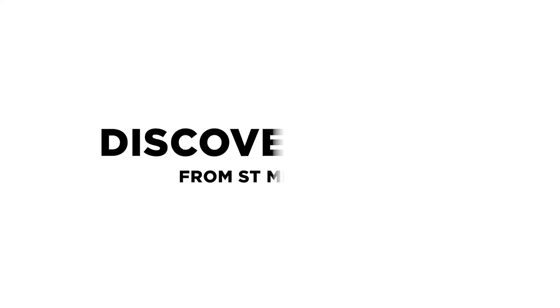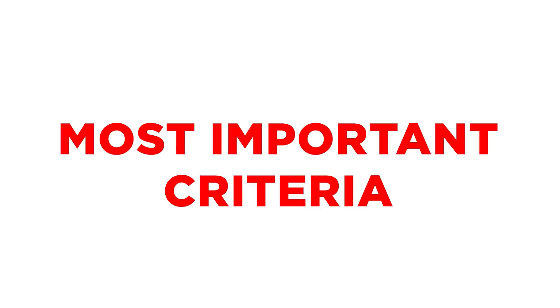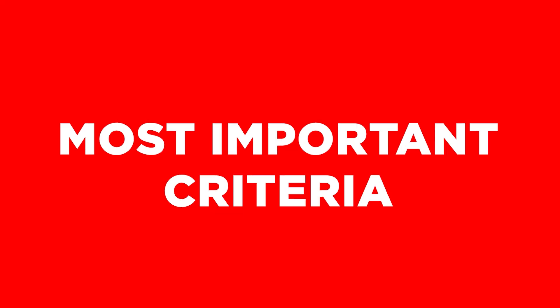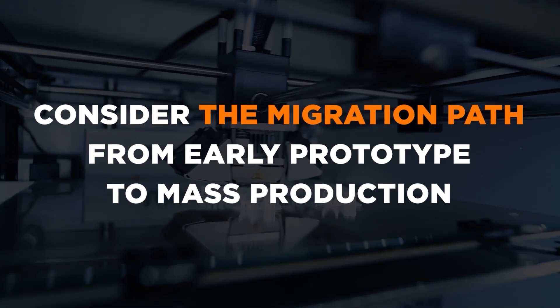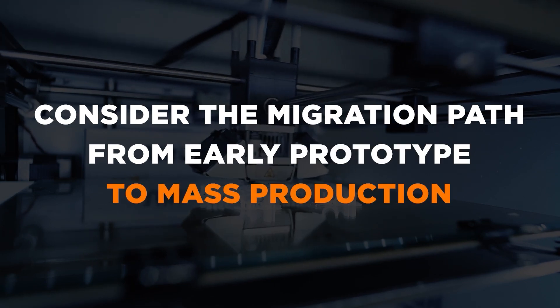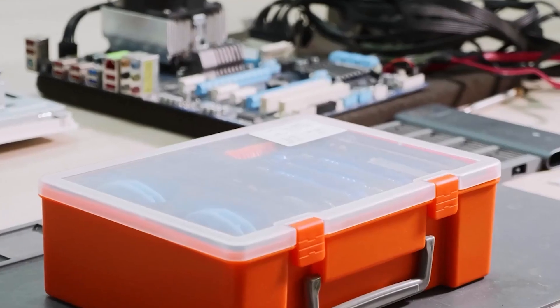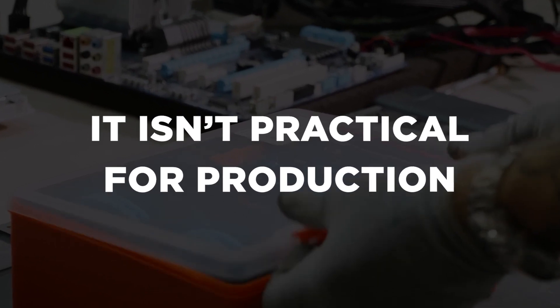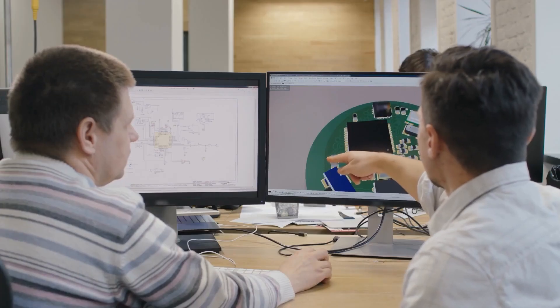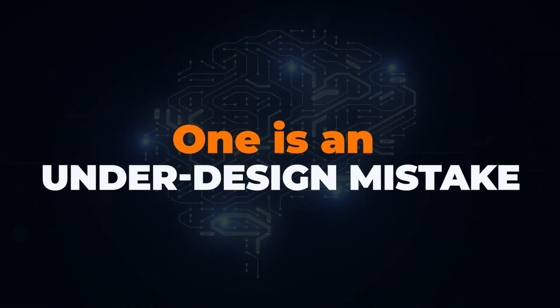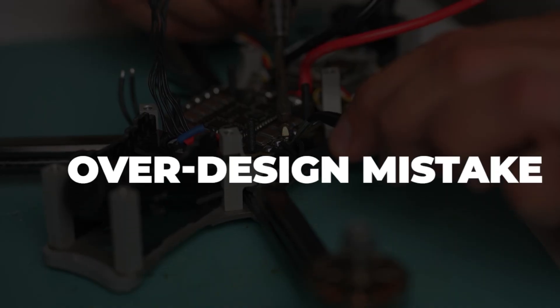STMicroelectronics offers two families of development boards based on the STM32 microcontroller: their Discovery boards and Nucleo boards. The most important criteria to keep in mind when selecting your development board — beyond whether or not it can even do what you want — is to be sure to consider the migration path from early prototype all the way to mass production. What frequently happens is someone will spend all this effort building and programming their proof of concept prototype using a development kit, only to later discover that it isn't practical for production and they have to basically start all over. There are two common cases where this most frequently happens: an under-design mistake and an over-design mistake.